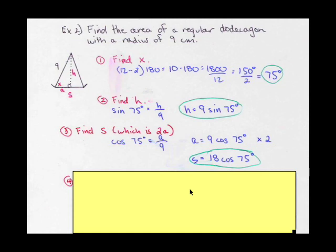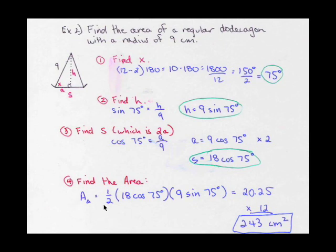Now I can find the area of that triangle doing one half base times height. So the area of the triangle is one half the base, 18 cosine 75, times the height, 9 sine 75, and that gives me approximately 20.25.